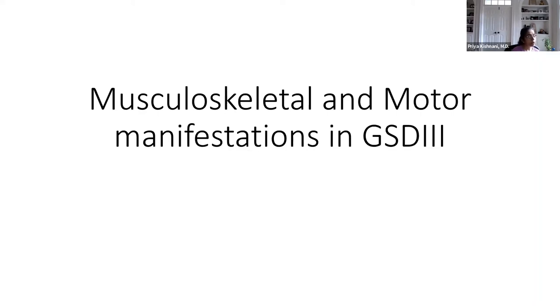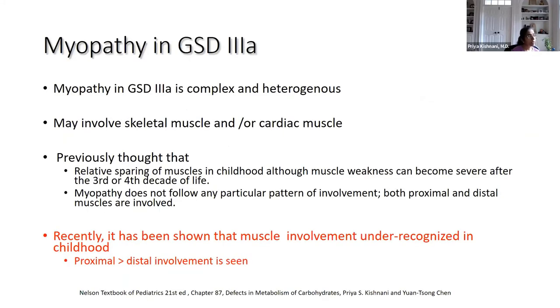Muscle involvement in GSD type 3 has been overlooked, especially in the pediatric age group. The involvement is complex and heterogeneous — it can involve skeletal muscle, smooth muscle affecting the gut and blood vessels, as well as cardiac muscle. What was previously thought to be relative sparing of muscles in childhood is now known to be under-recognition. Both proximal large muscle groups and distal small muscles away from the body can be affected.